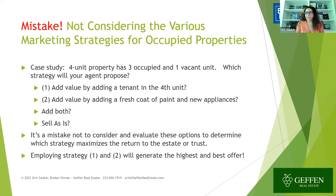It's also a mistake not to consider the various marketing strategies for occupied properties. Case study: a four-unit property with three occupied and one vacant unit. Which strategy will your agent propose? Add value by adding a tenant in the fourth unit; add value with fresh paint and new appliances; do both; or sell as-is. It's a mistake not to evaluate these options to determine which strategy maximizes the return to the estate or trust. Employing strategies one and two will generate the highest and best offer.